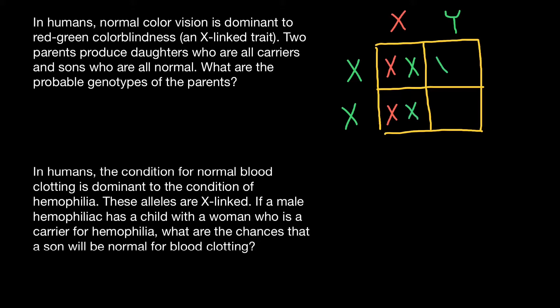All the sons are going to get a normal X chromosome from the mother's side and a normal Y chromosome from the father's side. As you see, in this family all children are going to be phenotypically normal. Sons are all going to be normal, and daughters also would have normal vision but would be carriers.